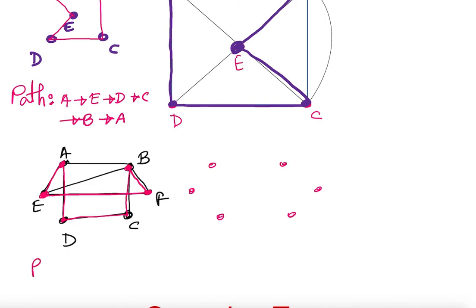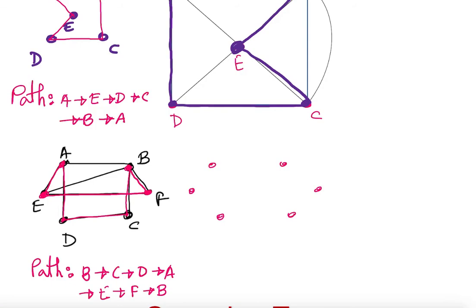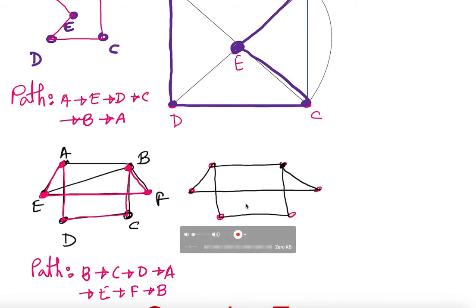So the path is: B to C, C to D, D to A, A to E, E to F, F to B. That is the path. I can also connect the vertices a different way — if I connect them this way and come back, it still works. Only the vertices matter. As you can see, this forms a Hamiltonian cycle — it looks a little like a house shape.